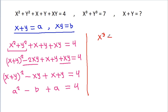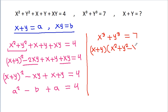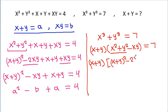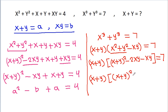And x cubed minus y cubed — it is x minus y times x squared plus xy plus y squared. We can write this as x minus y cubed plus 3xy times x minus y, which gives a cubed plus 3ab, and that is equal to 7.